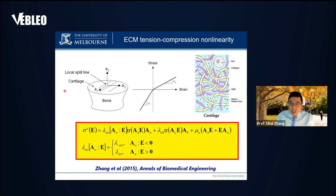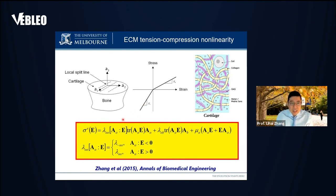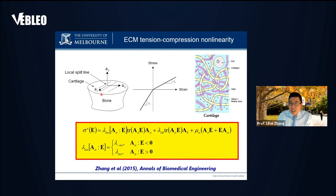The next challenge is modeling the ECM — extracellular matrix — specifically tension-compression nonlinearities. Cartilage tissue exhibits different tensile and compressive stiffness — unlike steel, which is linear. Tensile stiffness is carried by the collagen fibers, while compressive stiffness is carried by the GAG molecules. The model must be smart enough to use compressive stiffness where tissue is under compression, and tensile stiffness where tissue is under tension. These are the tension-compression nonlinearity equations.